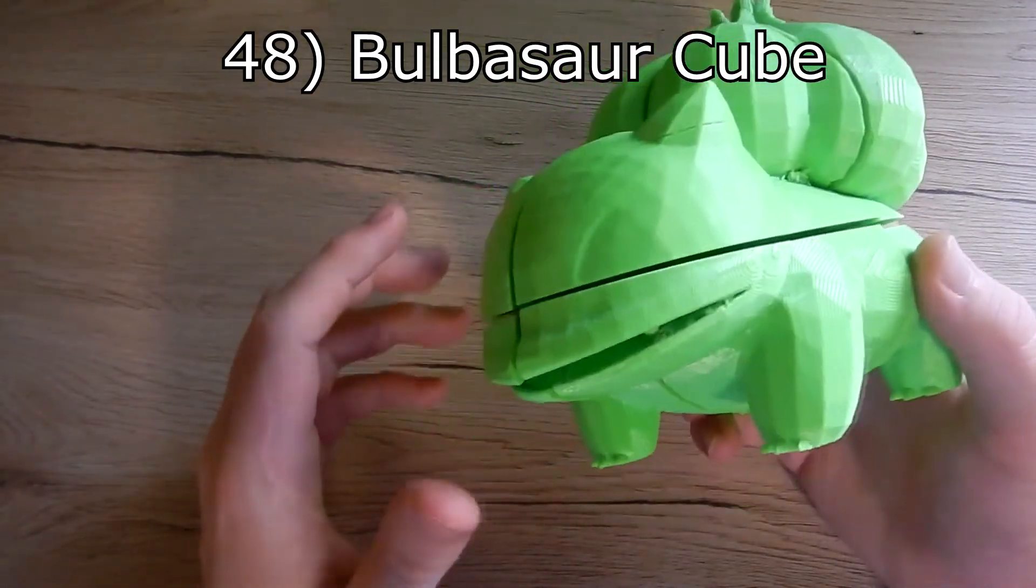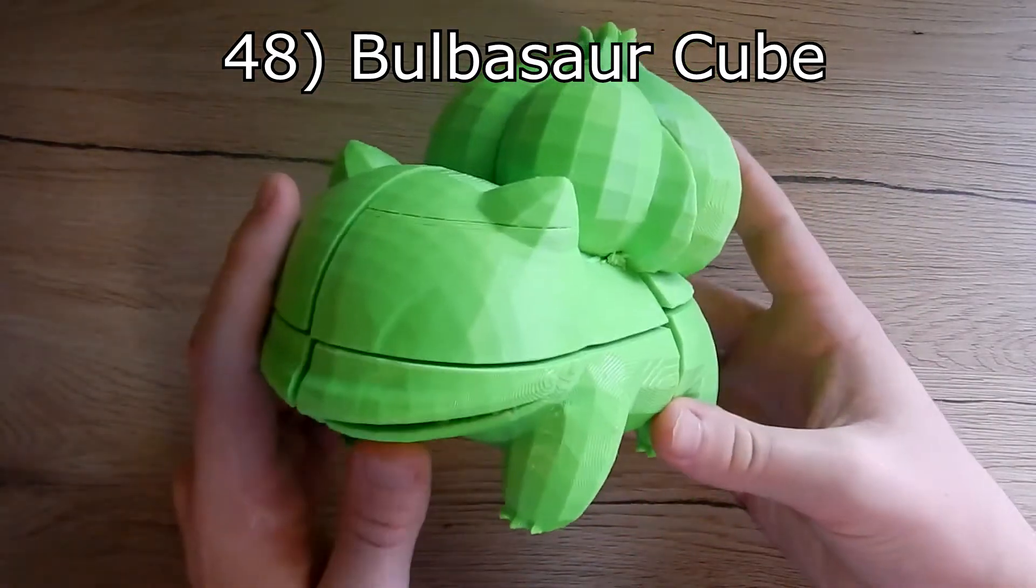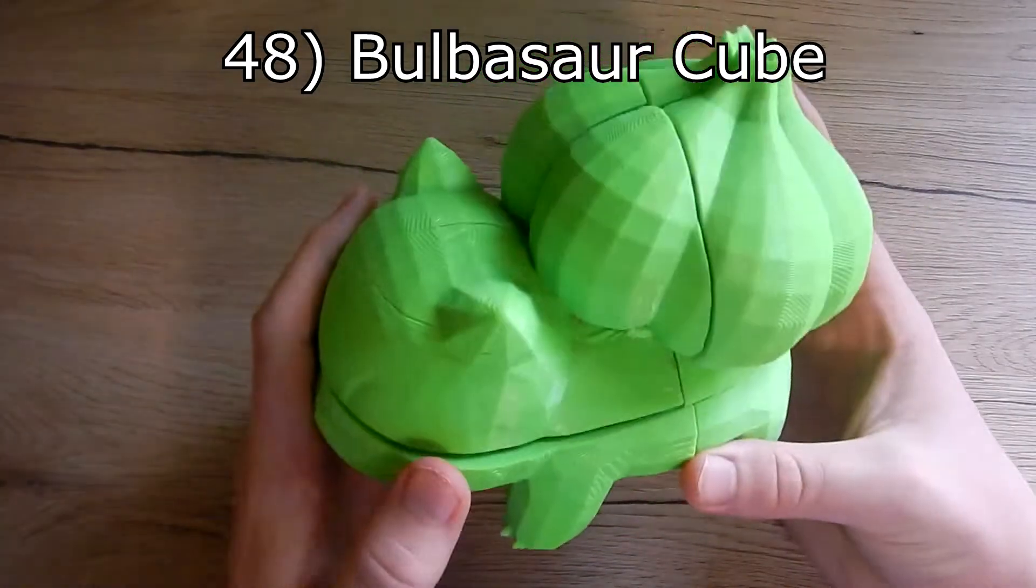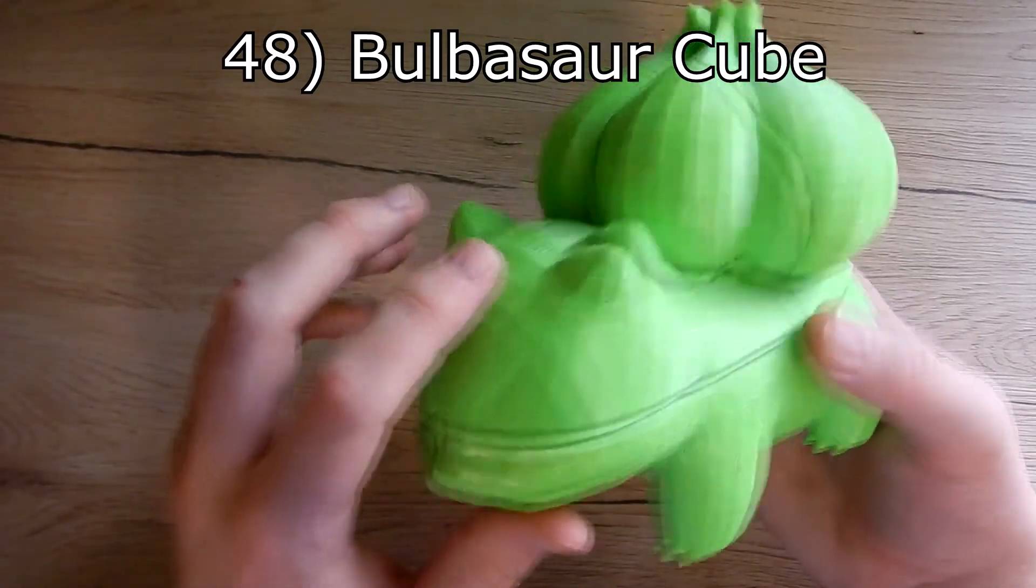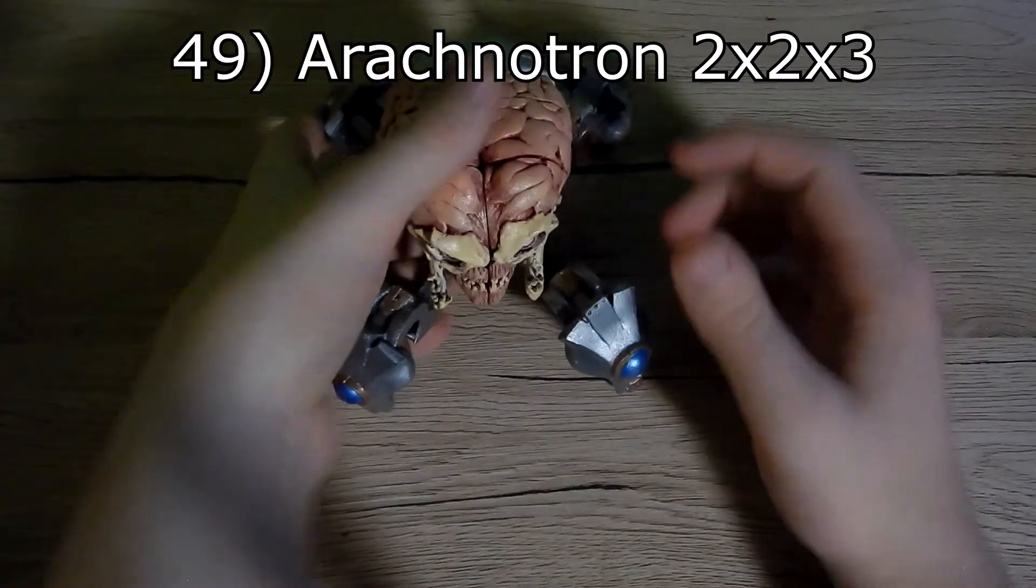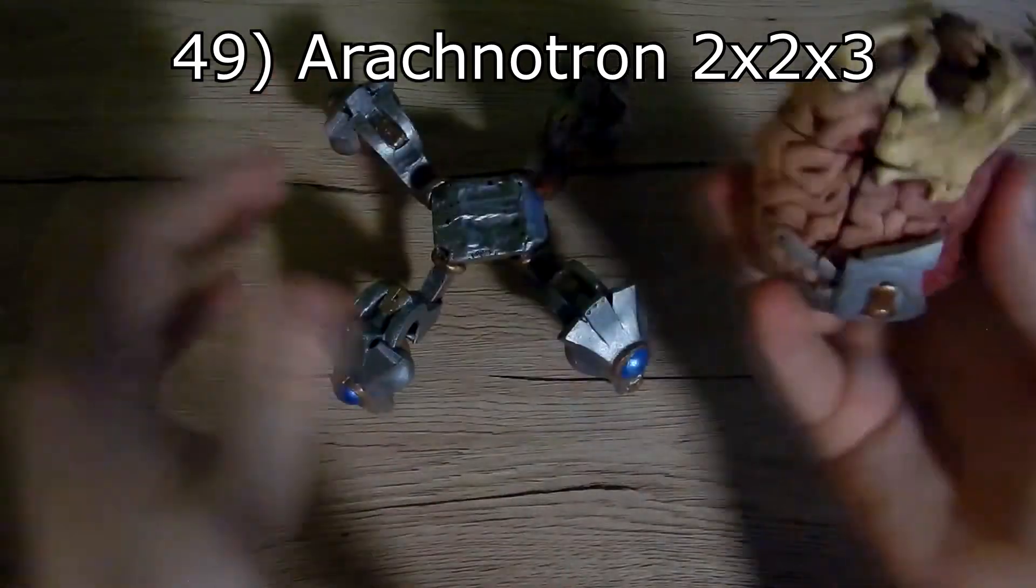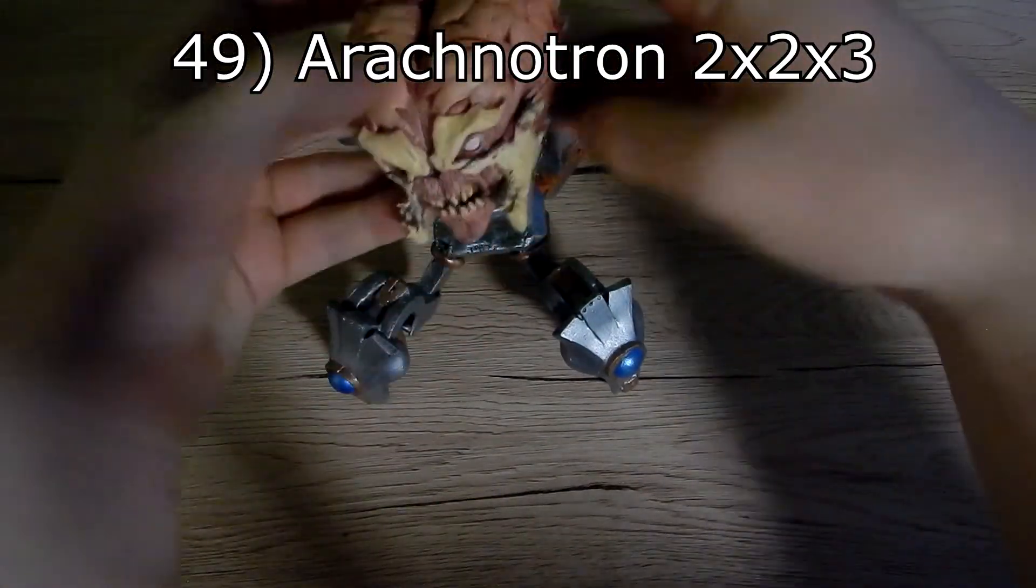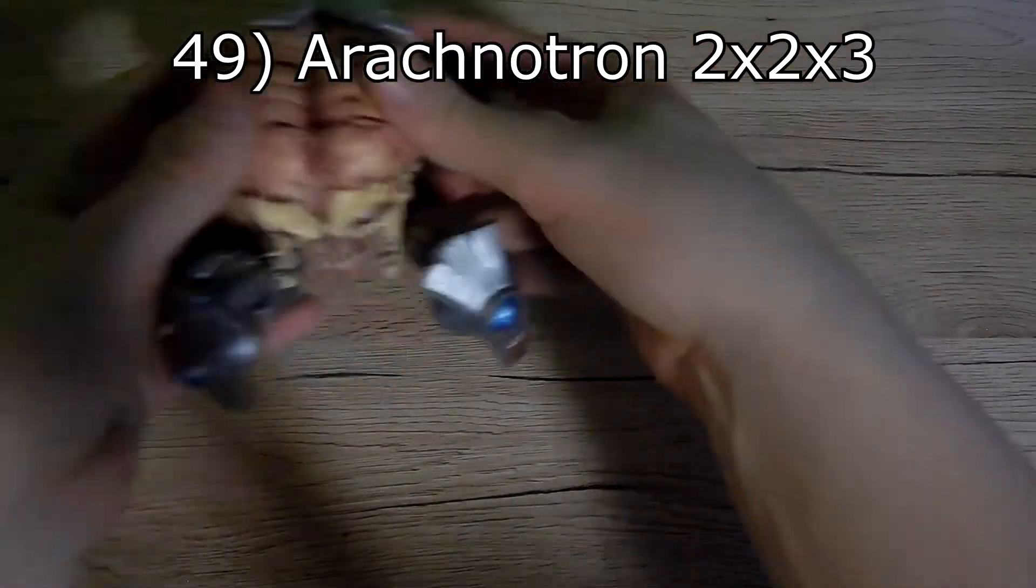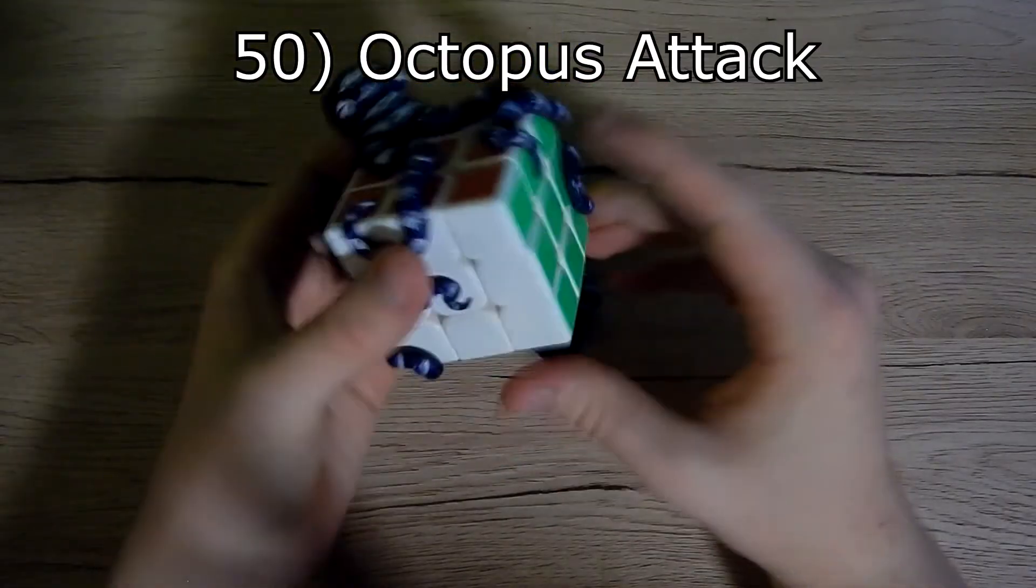Next we have Bulbasaur cube. It is a 3D printed model glued on 2x2. It's very big. It is unfinished, it is not painted yet. Next we have ED cubes. We have Arachnotron 2x2x3. It comes with a great stand. I like it a lot. Then we have octopus attack and alien.